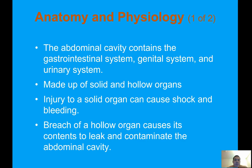Anatomy and physiology. The abdominal cavity contains the gastrointestinal system, genital system, and urinary system, made up of solid and hollow organs. Injury to a solid organ could cause shock and bleeding. Breach of a hollow organ causes its contents to leak out and contaminate the abdominal cavity.